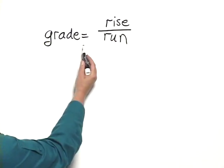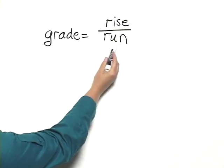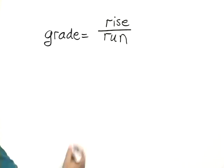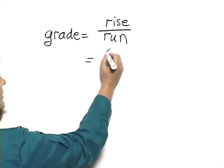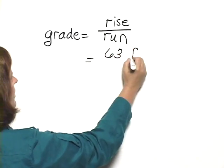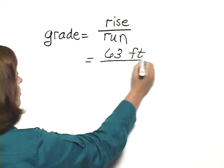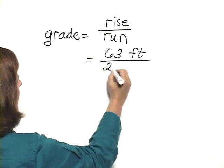The grade of a road is given as rise over run, and we'll rate it as a percent. The rise would be the vertical distance, which was 63 feet, and the run would be the horizontal distance, which is 200 feet.